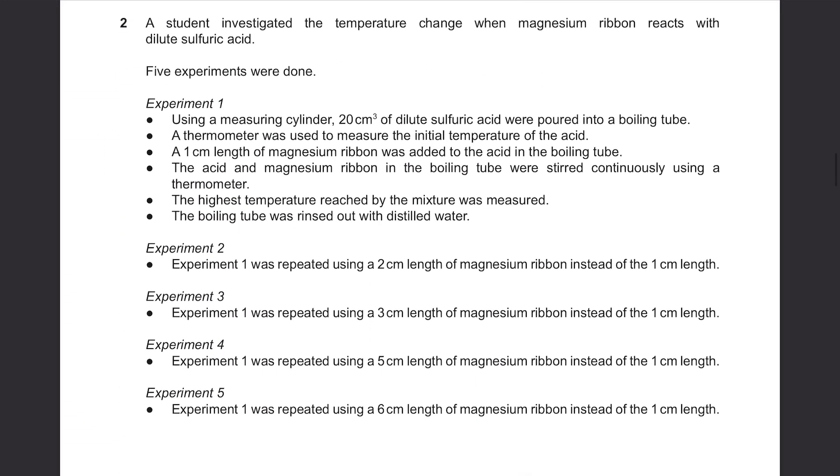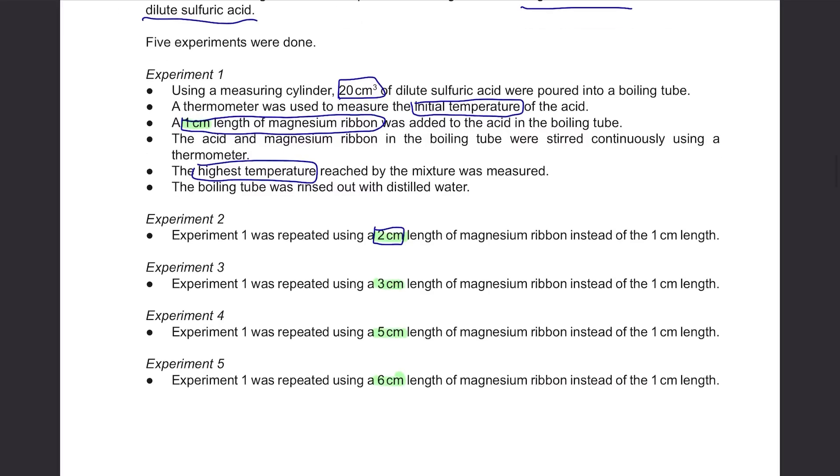Question 2: A student investigated the temperature change when magnesium ribbon reacts with dilute sulfuric acid. Five experiments were done. Experiment 1: Using a measuring cylinder, 20 cm³ of dilute sulfuric acid were poured into a boiling tube. A thermometer was used to measure the initial temperature of the acid. A 1 cm length magnesium ribbon was added to the acid in the boiling tube. The acid and magnesium ribbon in the boiling tube were stirred continuously using a thermometer. The highest temperature reached by the mixture was measured. The boiling tube was rinsed out with distilled water. Experiment 2: Experiment 1 was repeated using a 2 cm length of magnesium ribbon instead of the 1 cm length. So at first they used 1 cm, then for the second experiment they used 2 cm, then 3 cm, then 5 cm, then 6 cm.